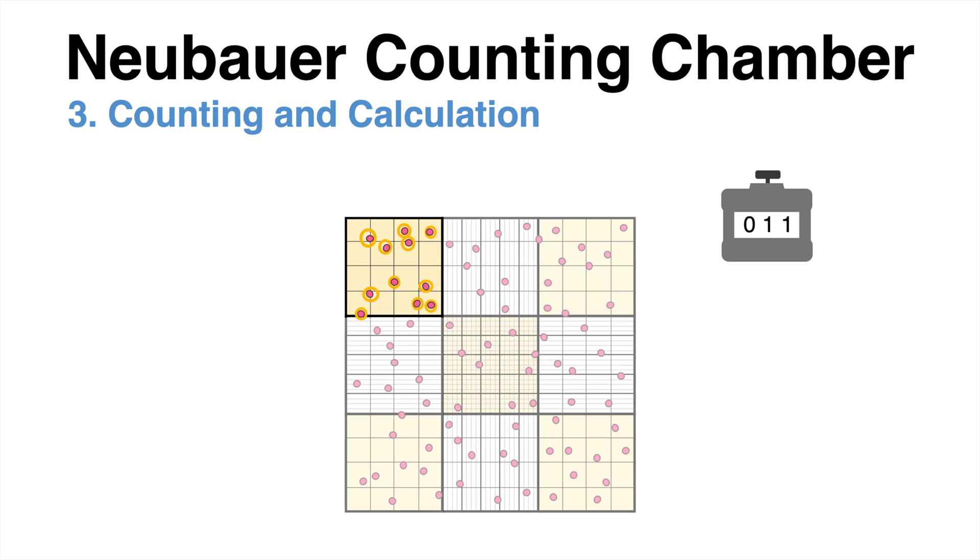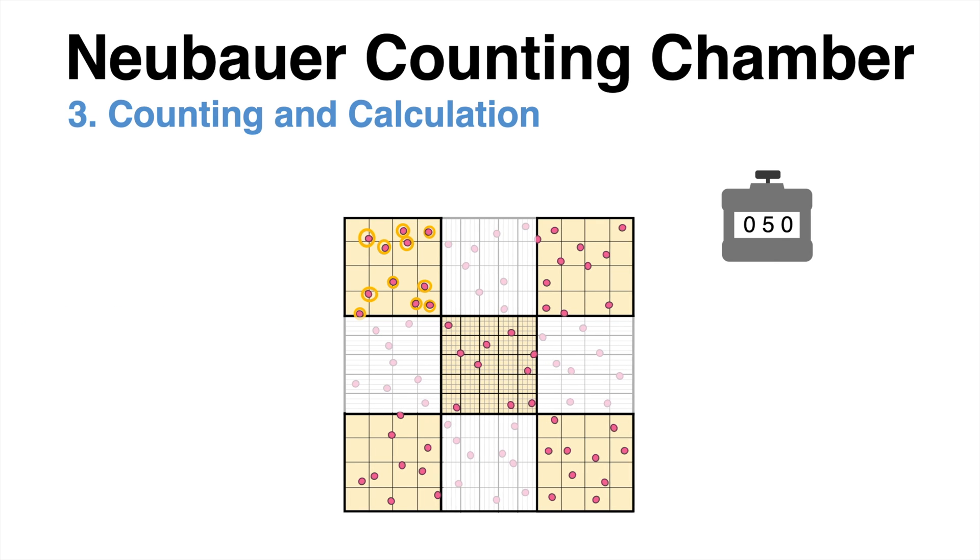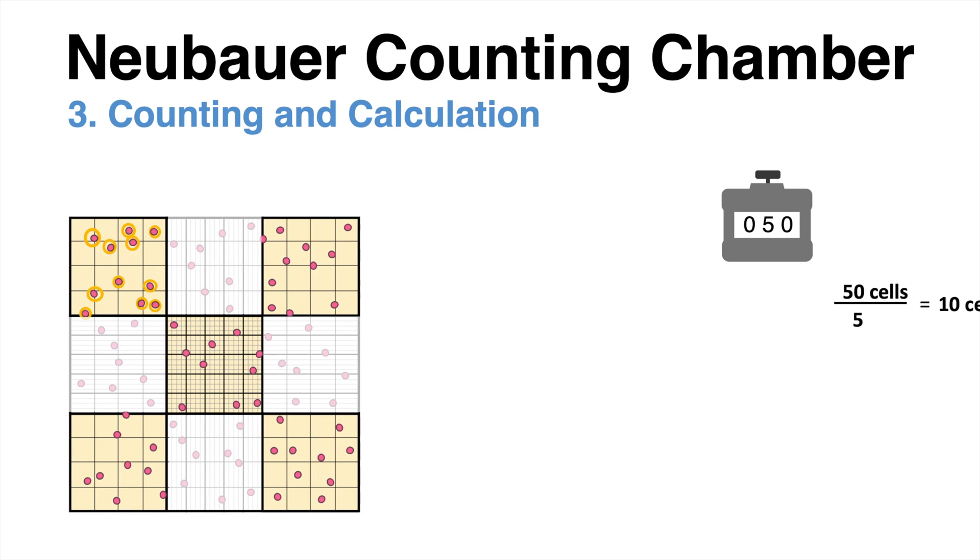After the counting is done for all highlighted squares, the average number of cells per square can be calculated. In this case, this is 10 cells per square which equals 10 cells in 0.1 µL.